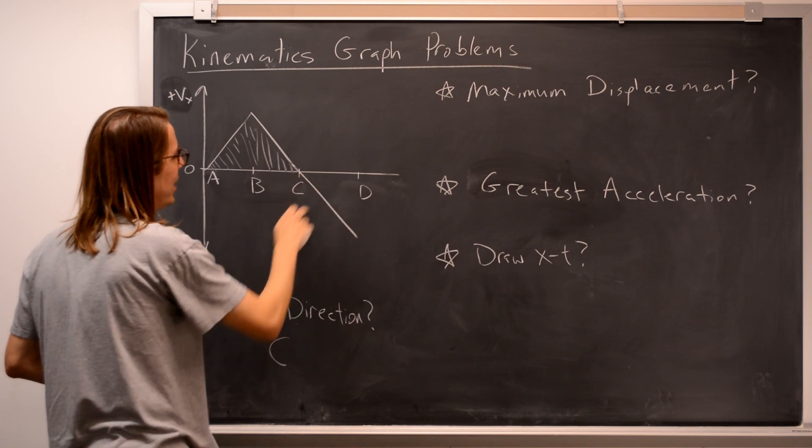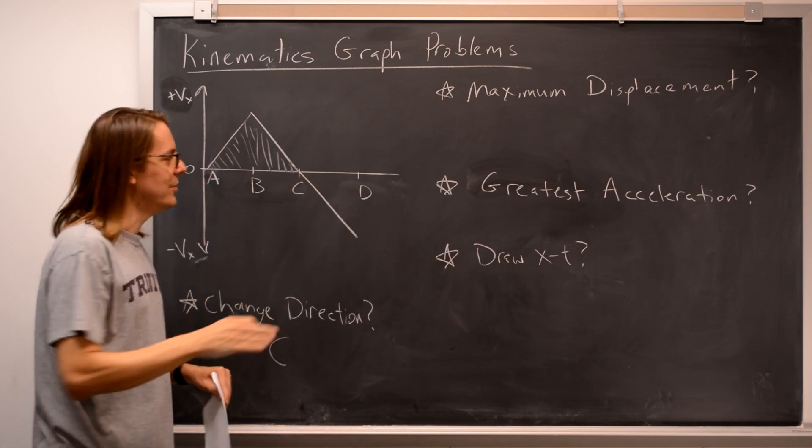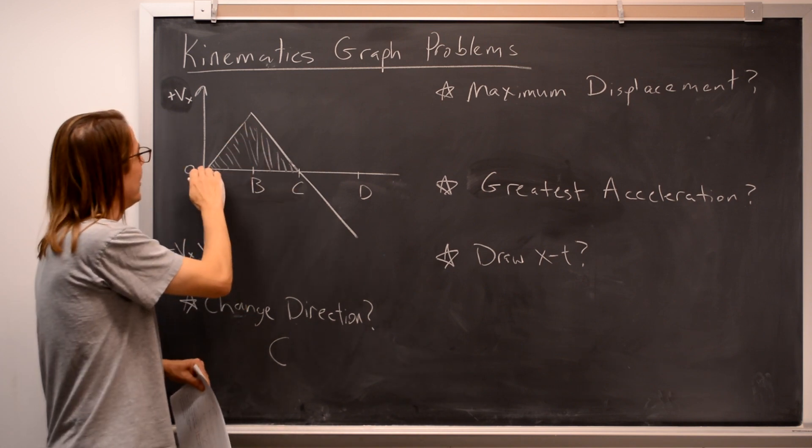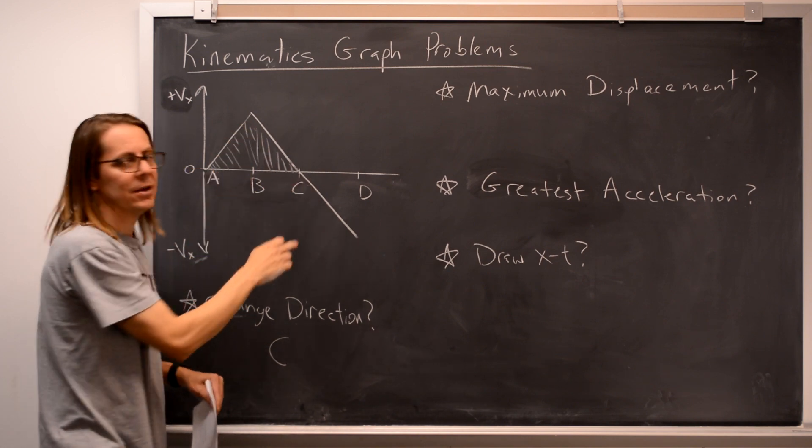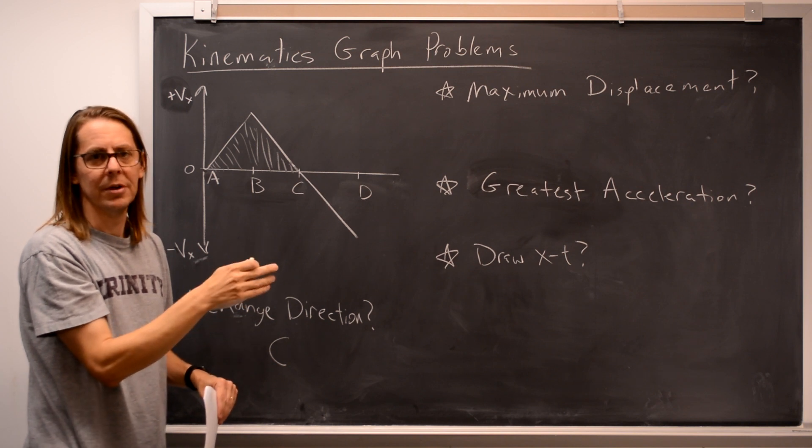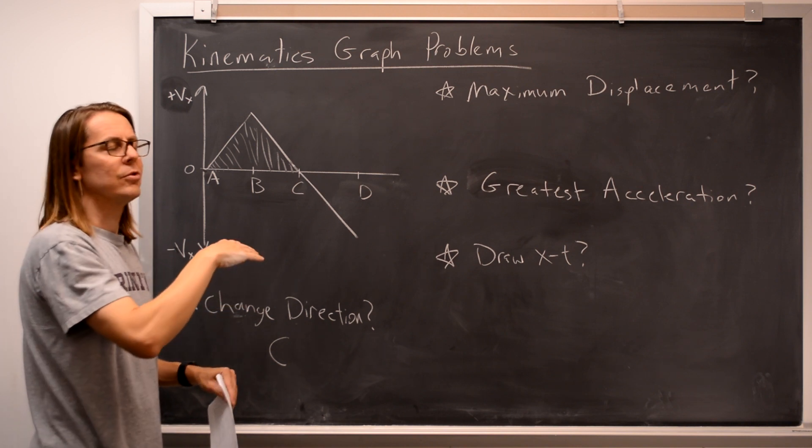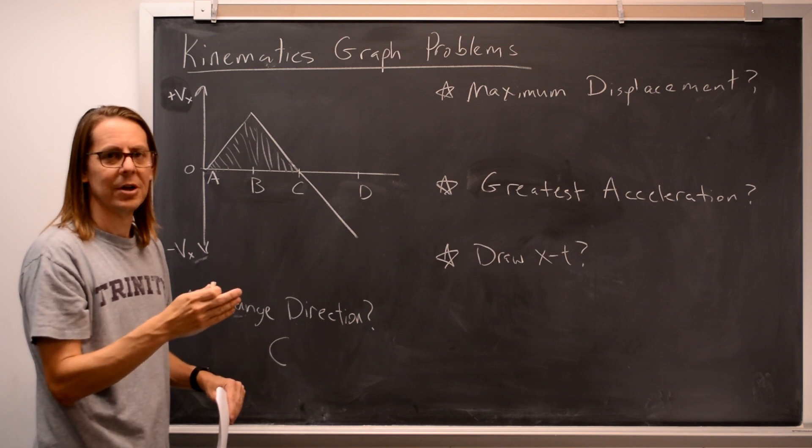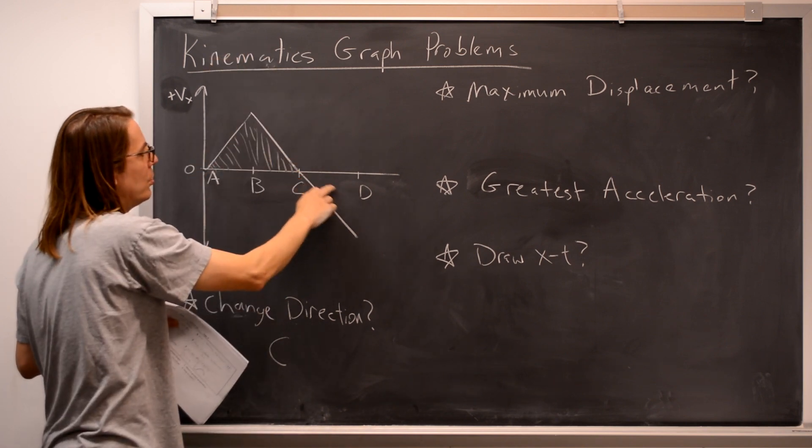But now let's go past C, and what happens is it's the area under the curve but above the axis. Because when you go on this side, you're starting to contribute negative velocities to the integral, and the integral is just a sum. So when you start to contribute negative velocities, you start to reduce the answer.